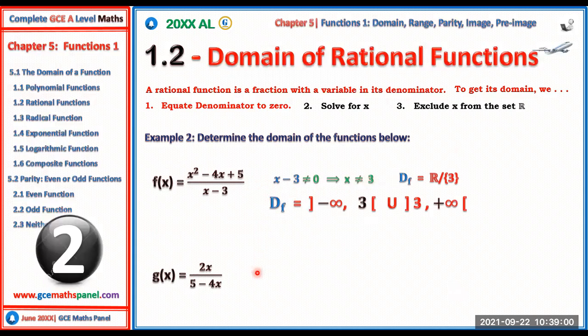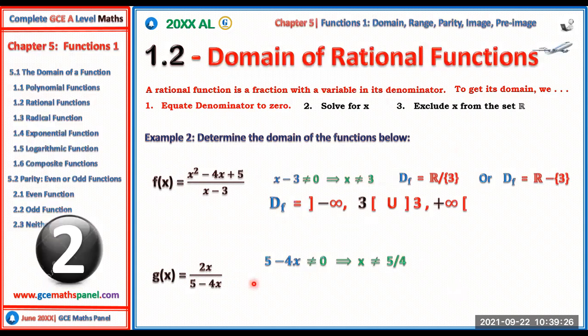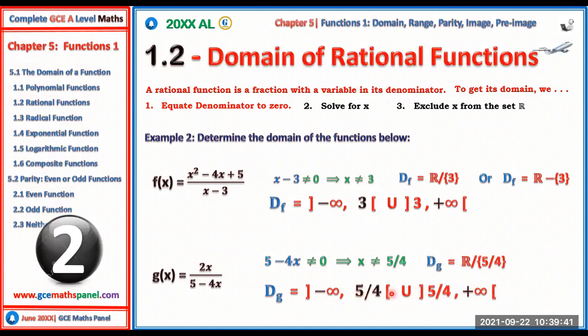For g(x) = 2x/(5 − 4x), we inequate 5 − 4x ≠ 0, giving x ≠ 5/4. The domain is all real numbers excluding 5/4, written in interval notation as (−∞, 5/4) ∪ (5/4, +∞). This can also be written as ℝ minus the set {5/4}.